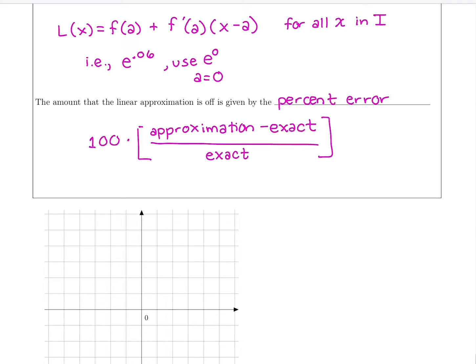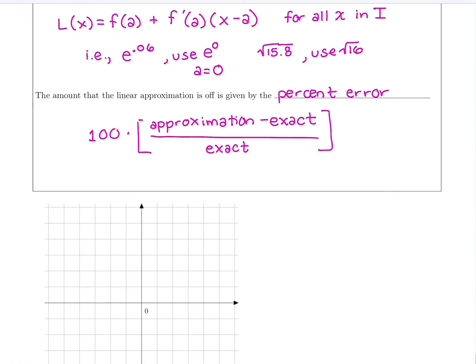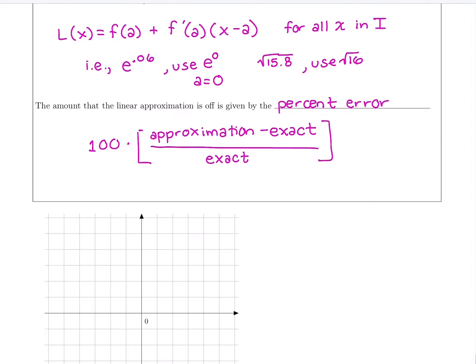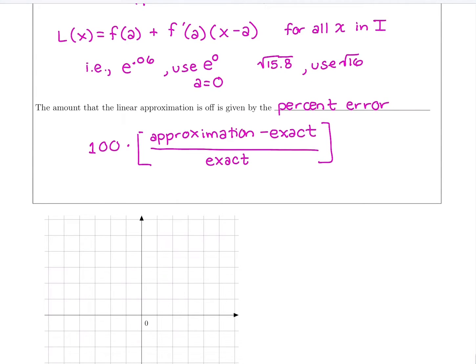So another example is I don't know what the square root of 15.8 is, but I can use the fact that I know the square root of 16 to figure that out. So we'll use close values that we can calculate without a calculator.